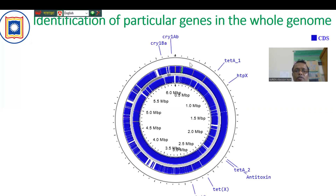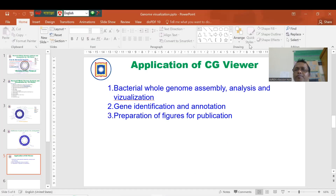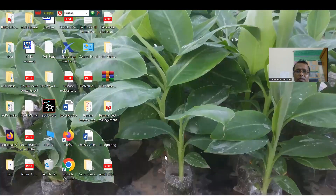The blue color represents coding sequences, which you can show along with the scale bar. The application of CGViewer includes bacterial whole genome assembly analysis and visualization, gene identification and annotation, and preparation of figures for publication. Now let's go to the website and practically see how to do that.